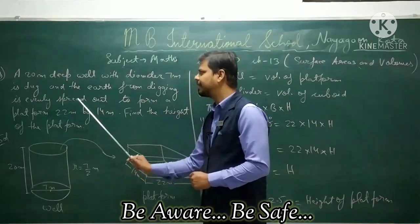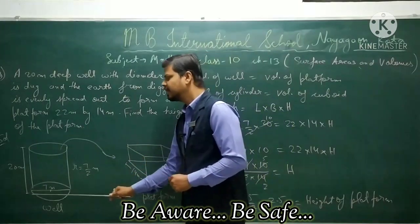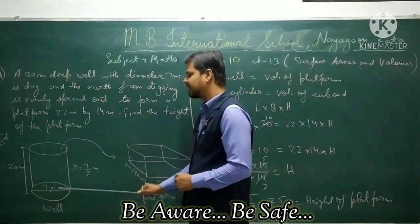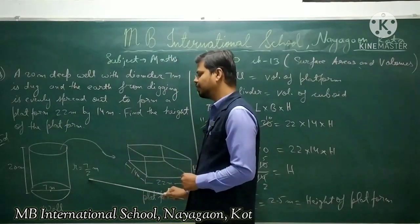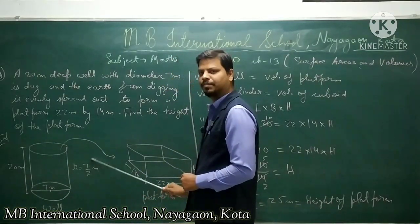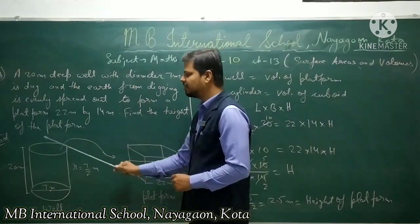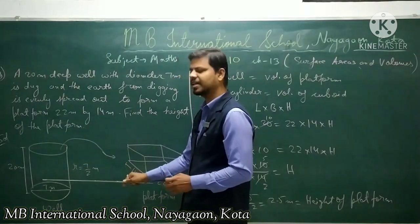The well has a diameter of 7 meter. Since diameter is 7 meter, the radius is 7 upon 2 meter. So radius equals 7/2 meter for the well.